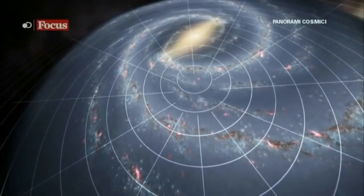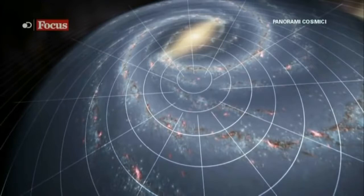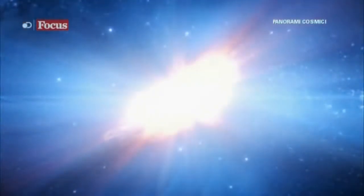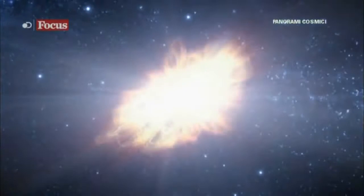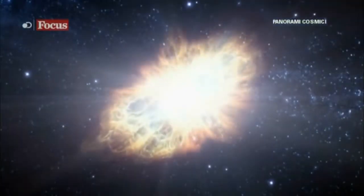Molto presto altre parti familiari sparse lungo la Via Lattea furono riconosciute come facenti parte del braccio di Perseo tra queste la spettacolare nebulosa del Granchio, il resto dell'esplosione di una supernova registrata nel 1054.